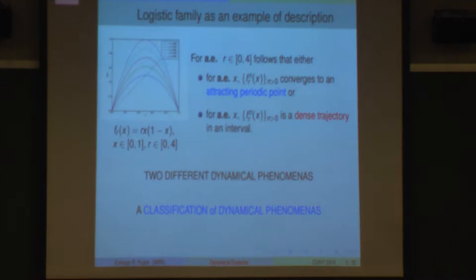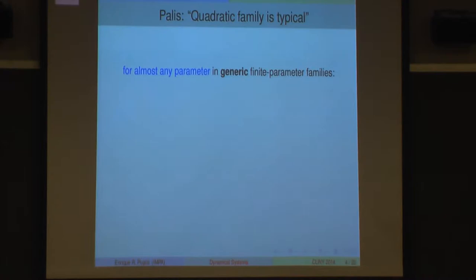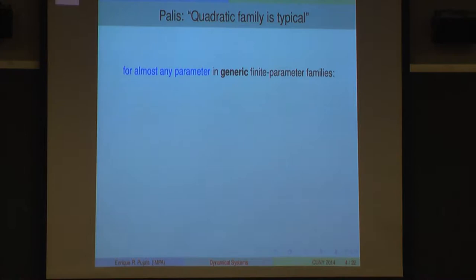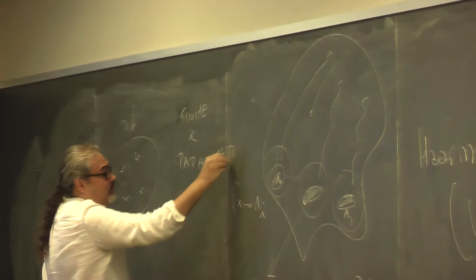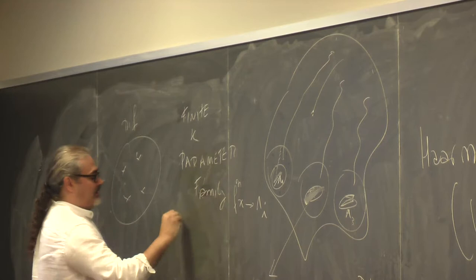Using the word 'generic,' you're referring to a Baire-category notion. You have a set of diffeomorphisms with the C^r topology and can talk about a generic set. But you can also talk about a finite k-parameter family, which is also a metric space, and talk about the generic family and inside each family, almost every point.